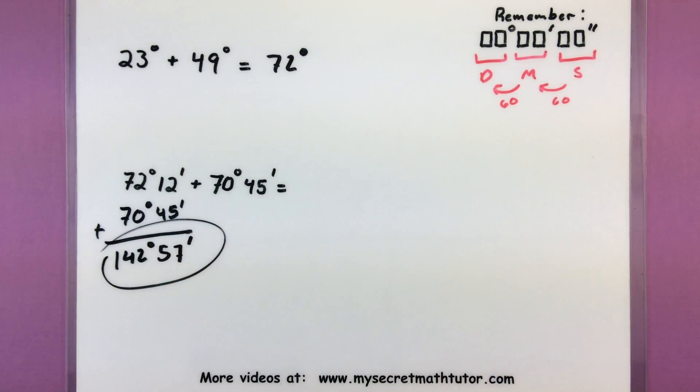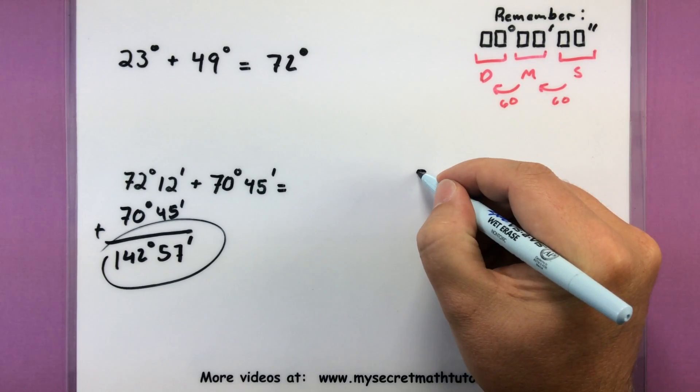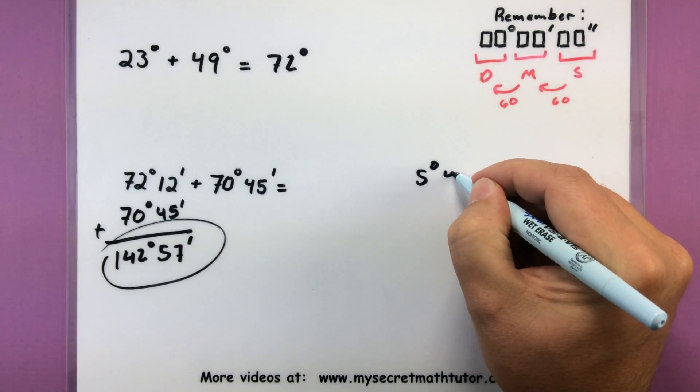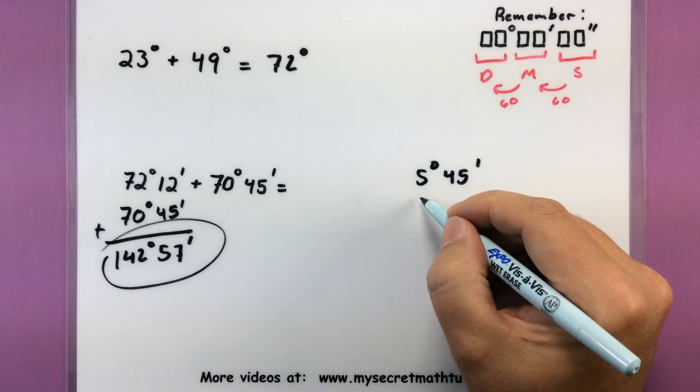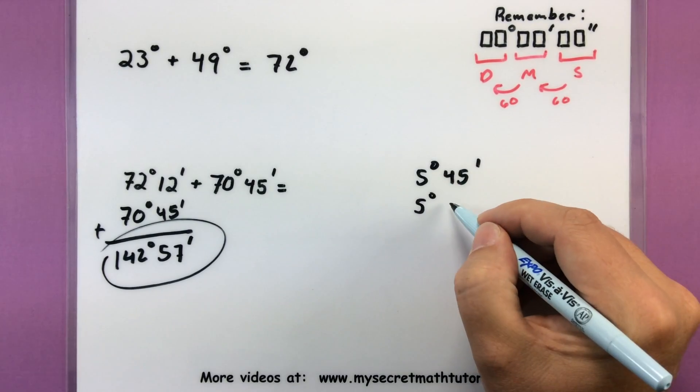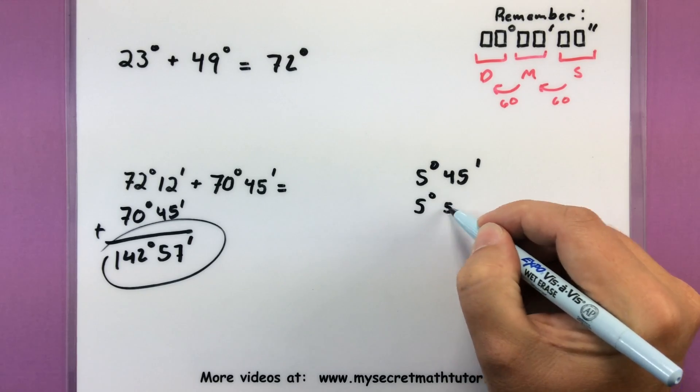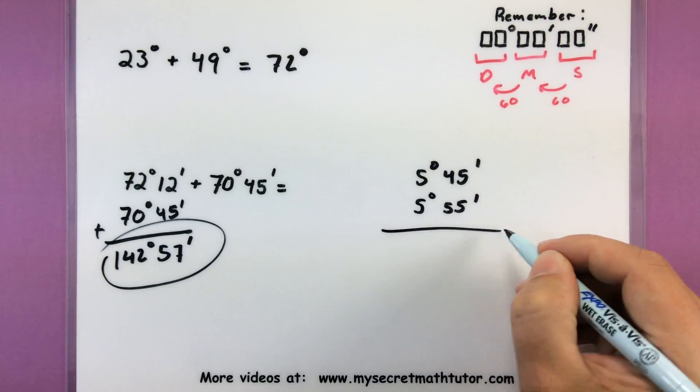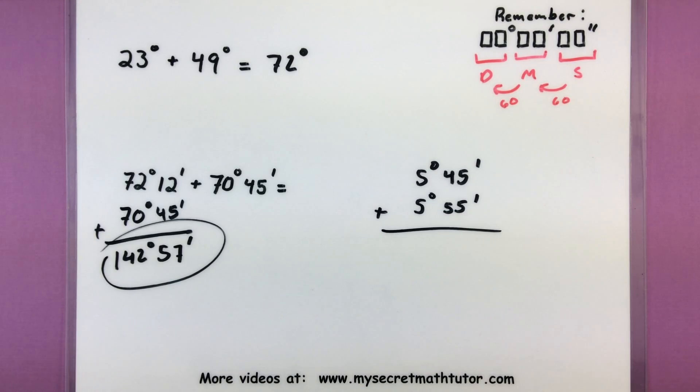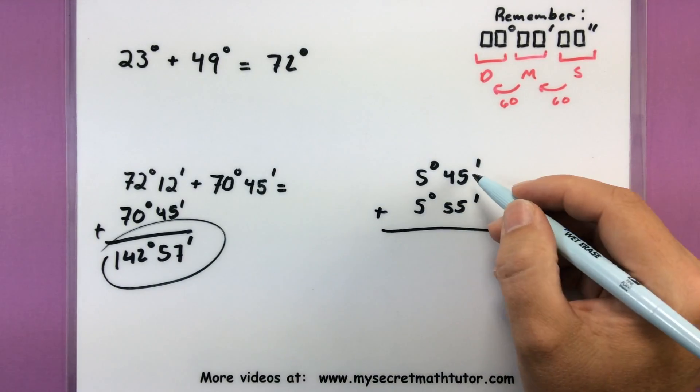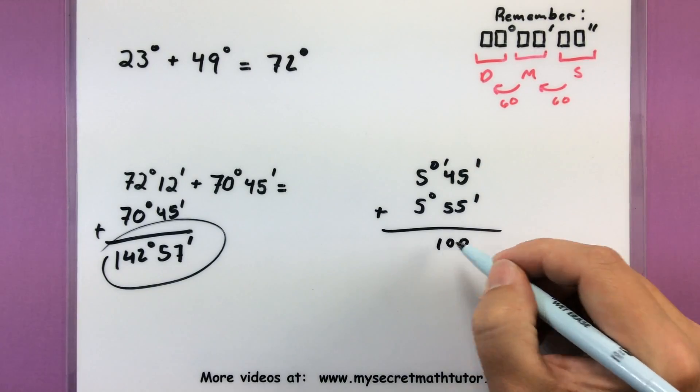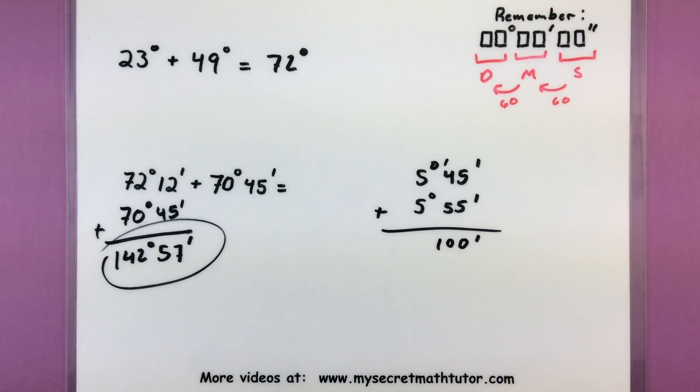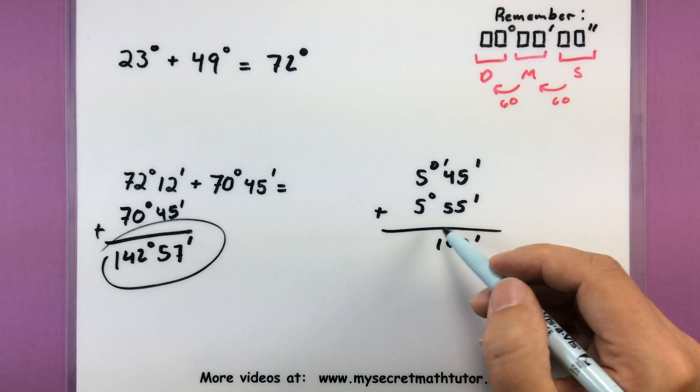As another quick example of what I'm talking about with that borrowing process, I'll just do a really quick one. Let's add 5 degrees and 45 minutes to 5 degrees and 55 minutes. So when I go to add the minutes column, I get a lot of stuff in there. So 5 plus 5 is 10, 5 and 5 I get another 10. Look at that, I have 100 minutes in that column, which is a bit much.